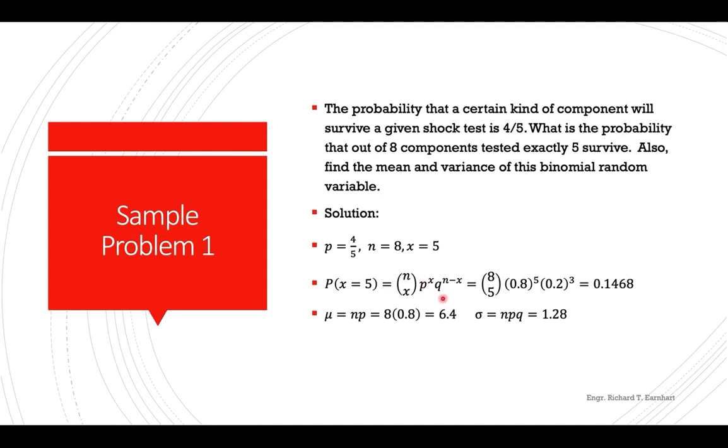So using the formula, this will be eight combination taken five times point eight raised to five times point two raised to three. So point two here is the complement of 0.8, the probability of failure. So using your calculator, you should be getting 0.1468 to four decimal places.